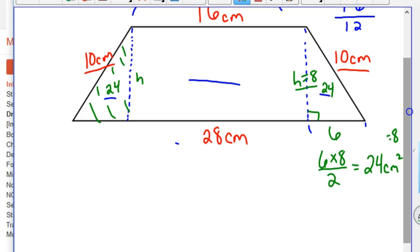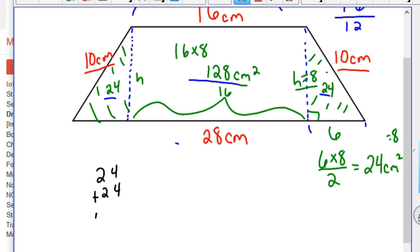So we've got the area of the two triangles. Now the area of the rectangle in the middle is 16 is the base of the rectangle, and 8 is the height of the rectangle, so it's 16 times 8, which is 128 centimeters squared. So to find the total area of this thing, you can go ahead and add 24, plus 24 for the two triangles, plus 128. Add that together, and we get 176 centimeters squared.